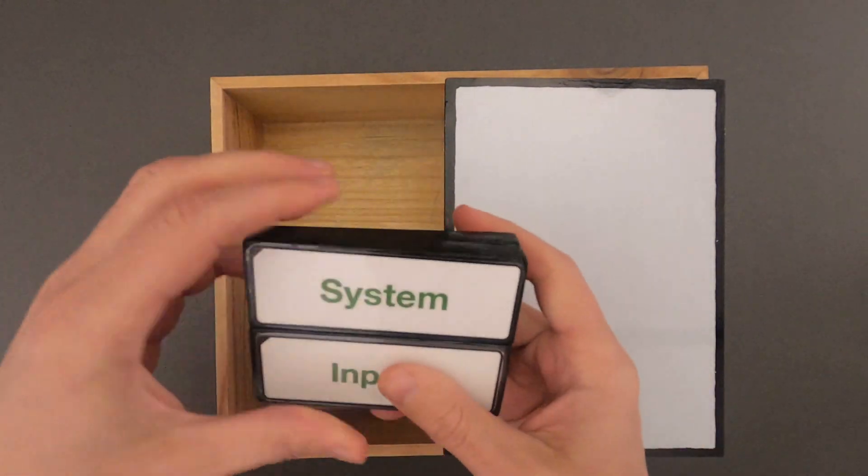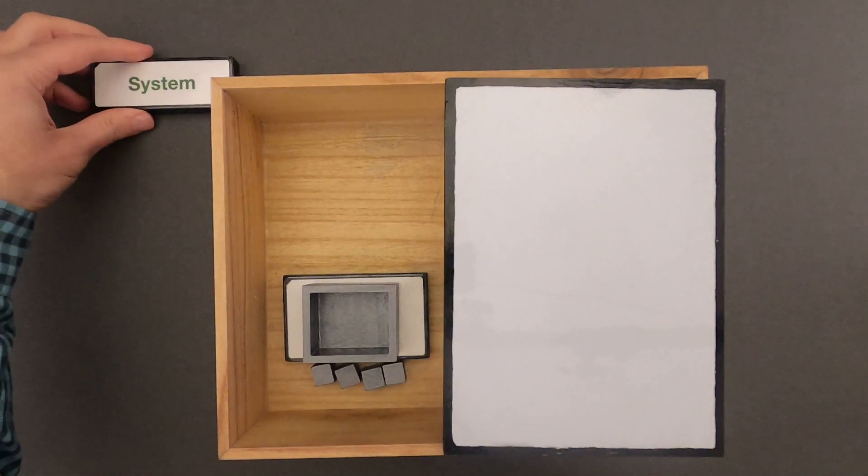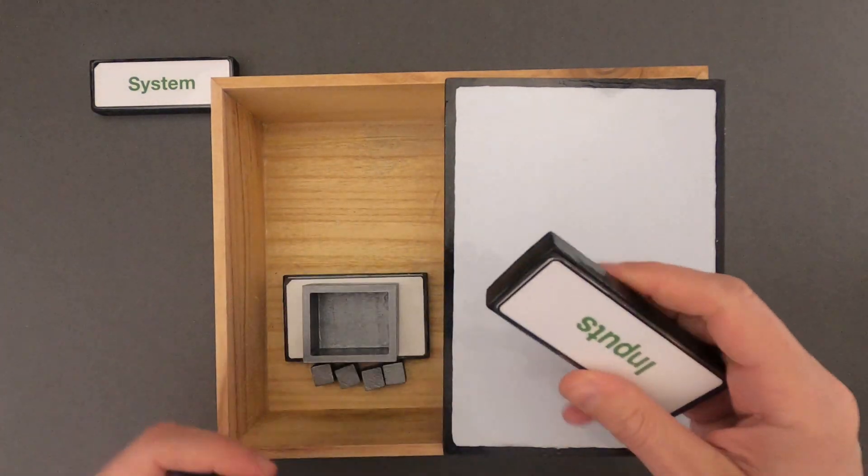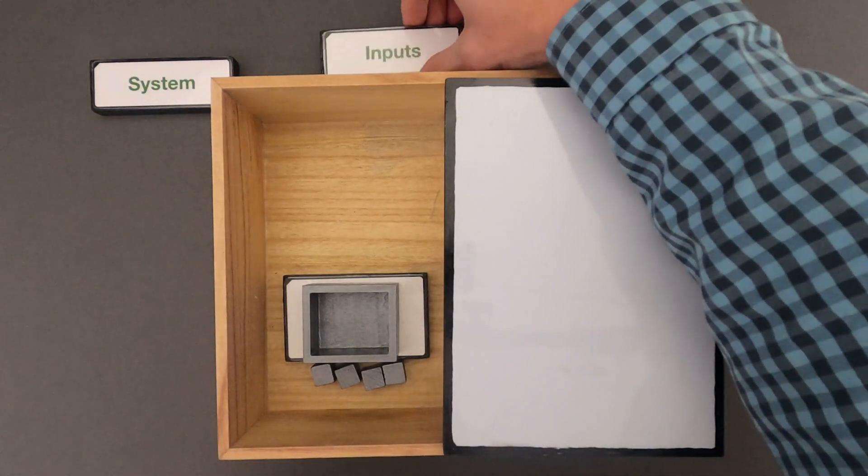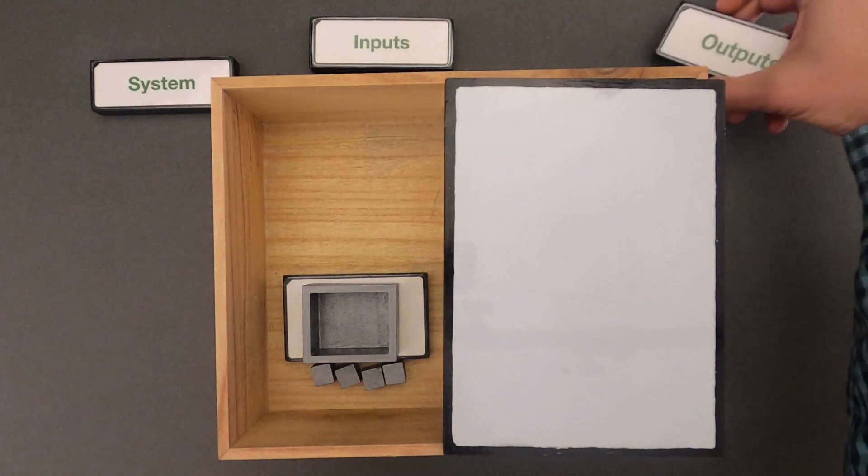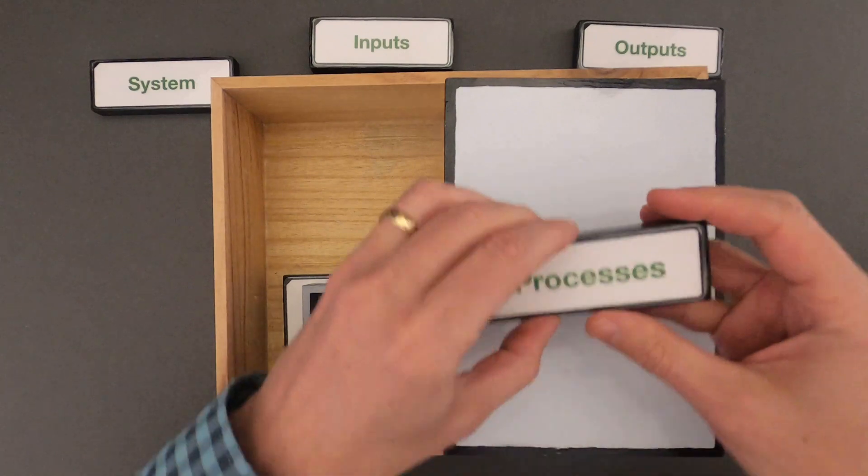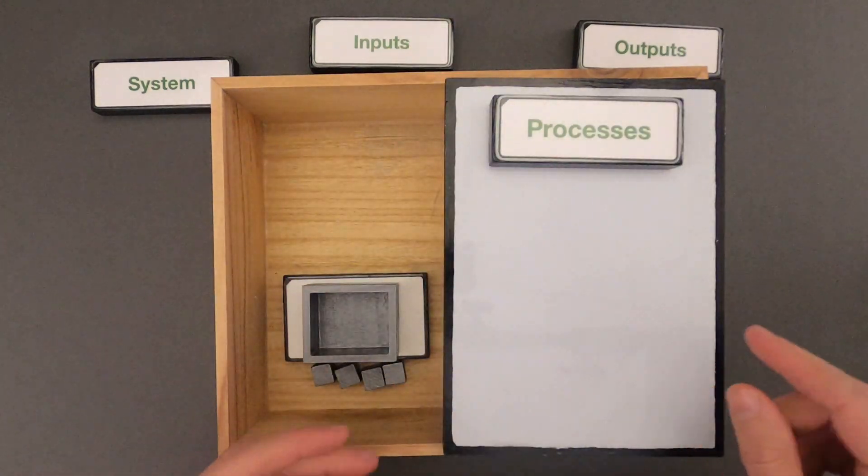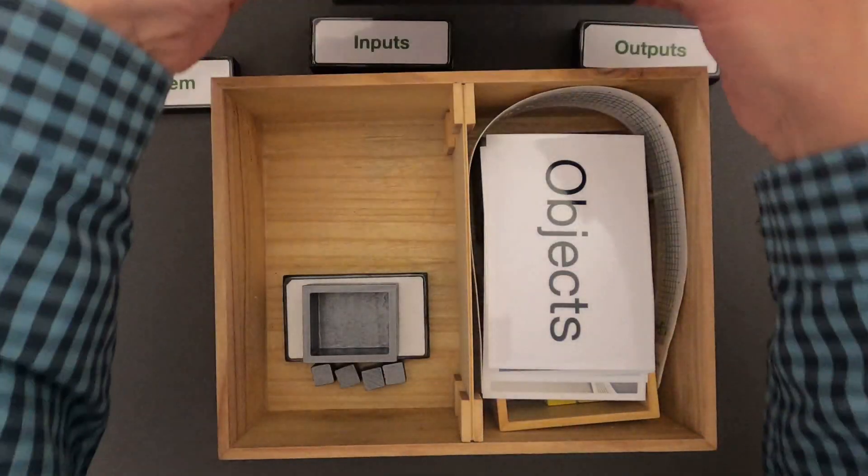When you're thinking about systems you should always define the system that you're going to investigate. In this video what we're going to look at is how do things move into a system? We call those inputs. How do things move out of a system? We call those outputs. And then what are all the processes involved in them moving into and out of the system?